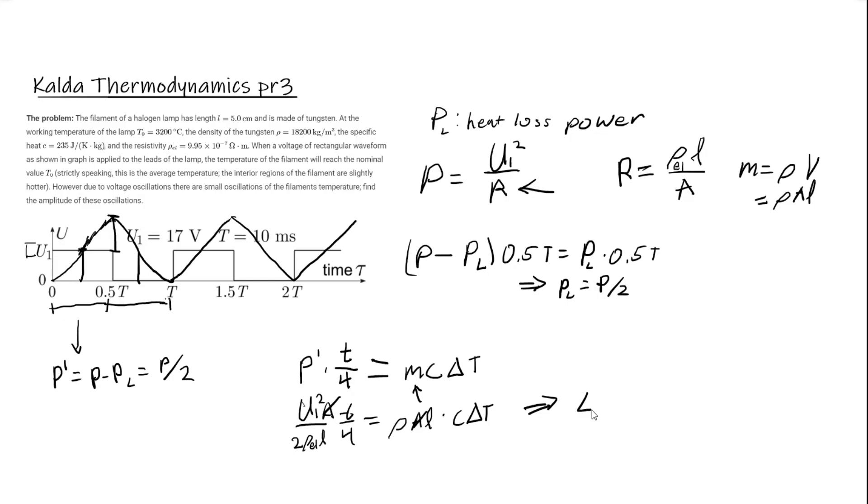Now let's solve for delta t. This gives us delta t equals U sub 1 squared times t over 8 rho L times rho sub L squared times c.